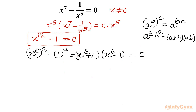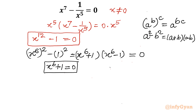Now I will solve both brackets separately. Because of this product equal to 0, we can write either x power 6 plus 1 equal to 0, or x power 6 minus 1 equal to 0. We will solve one by one.